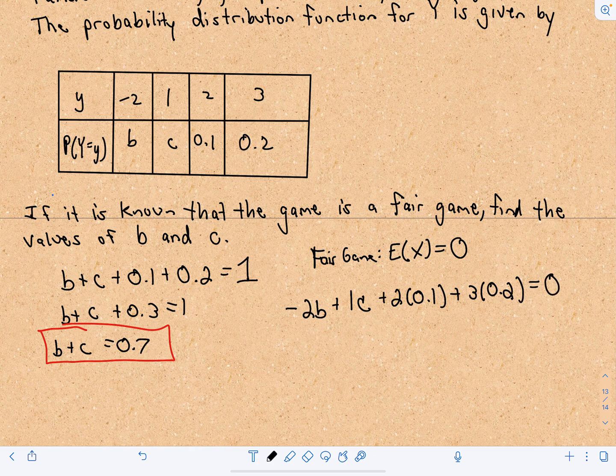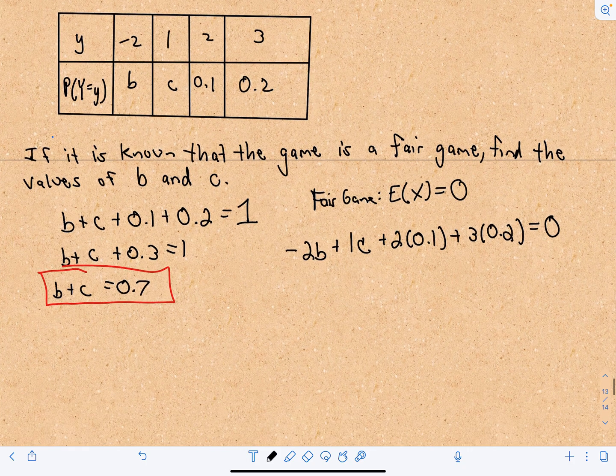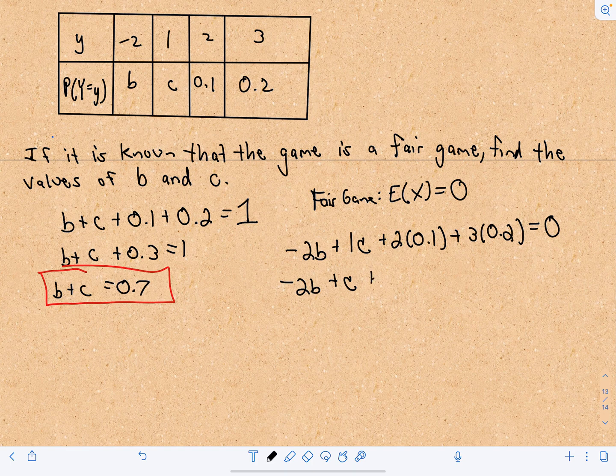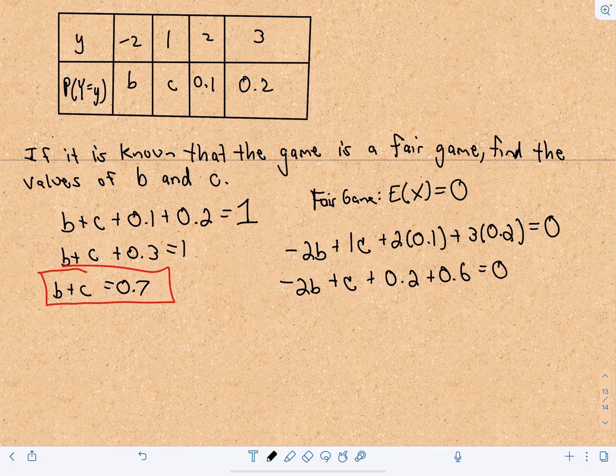We know that that's going to have to equal 0. Again, that's what we're using right here. It's a fair game. So this is the expected value. So that gives us negative 2B plus 1C plus, if we multiply, that's going to be 0.2 plus 0.6. That's going to equal 0.